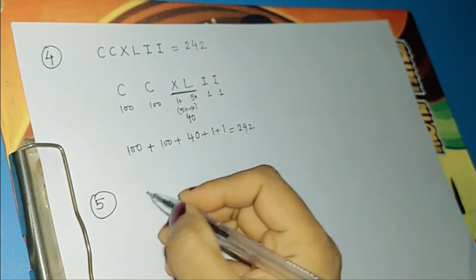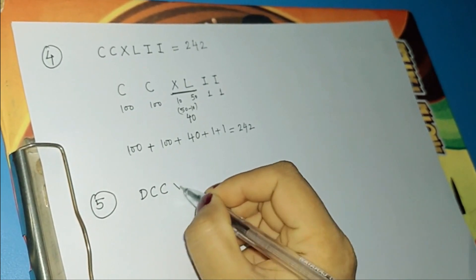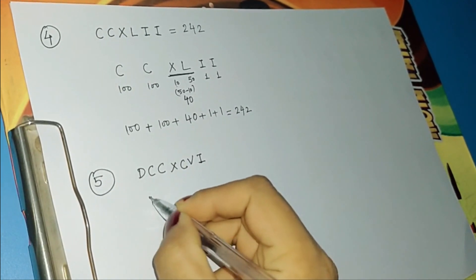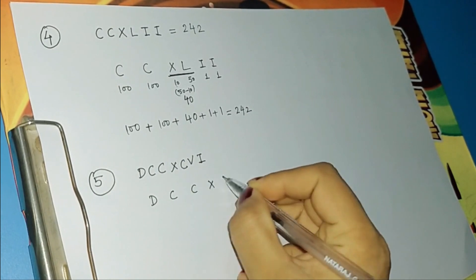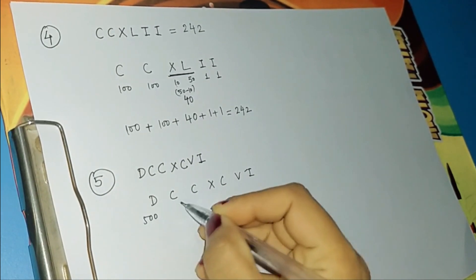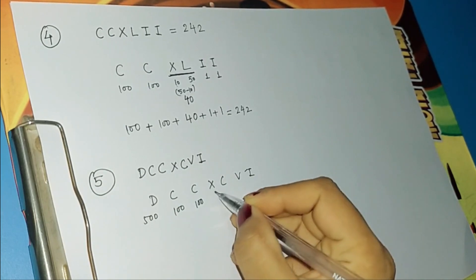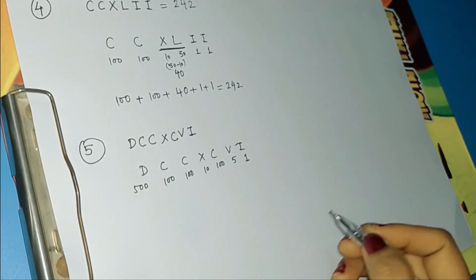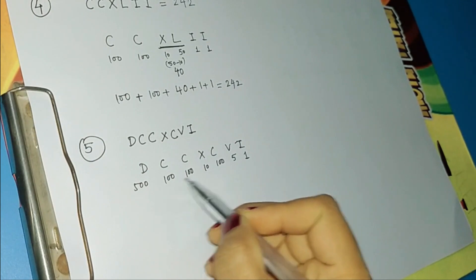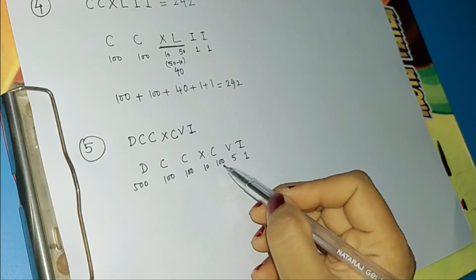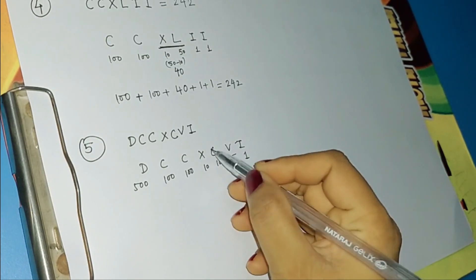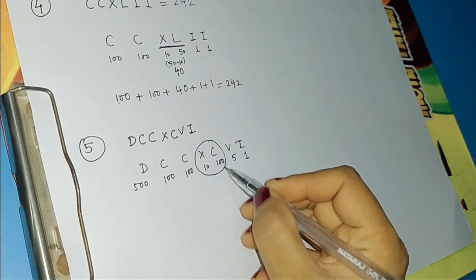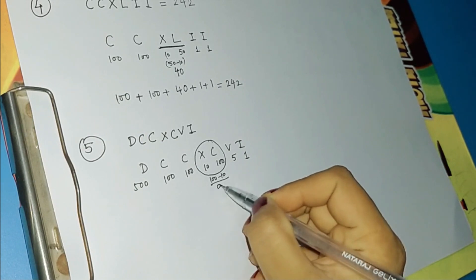Our next example is DCCXCVI. We write down the equivalent values: D is 500, C is 100, C is 100, X is 10, C is 100, V is 5, I is 1. The sequence 500, 100, 100, 10 is fine, but then 10 followed by 100 is not in sequence. So XC is the sequence changer, and we subtract 10 from 100 to get 90.